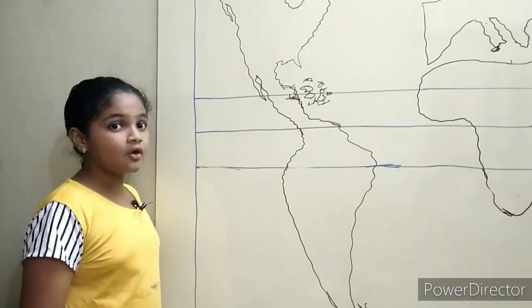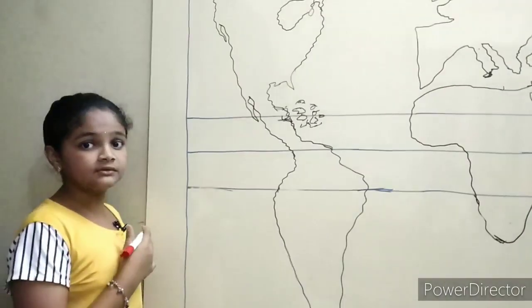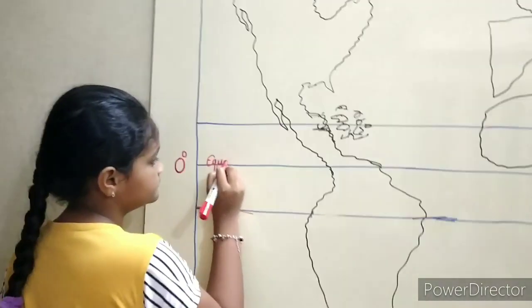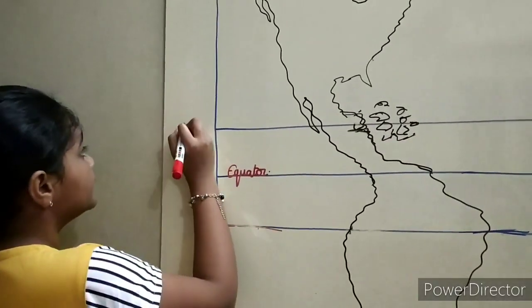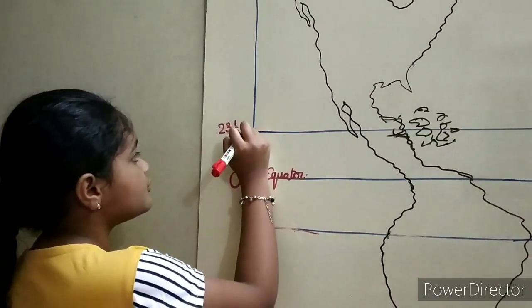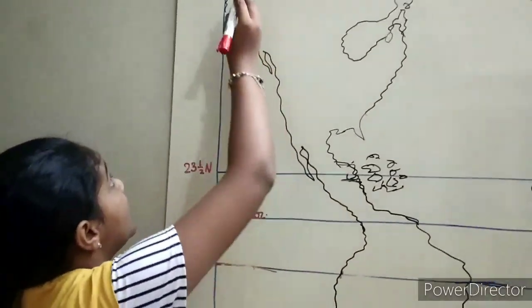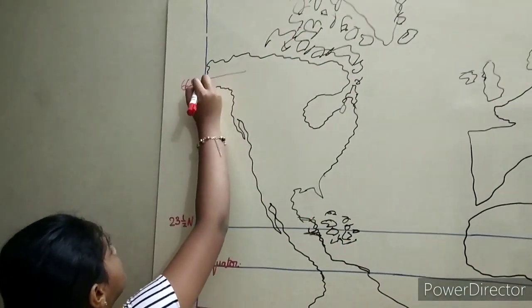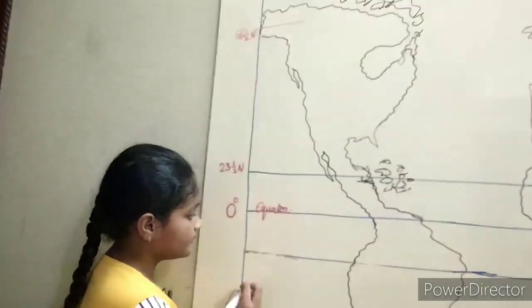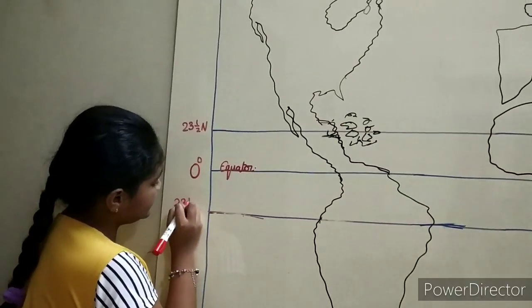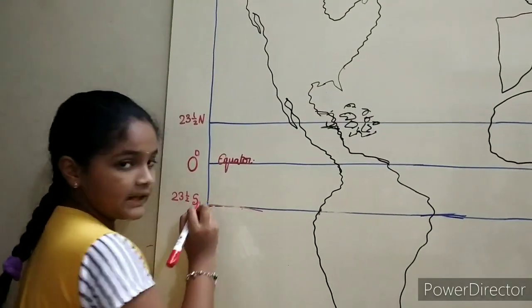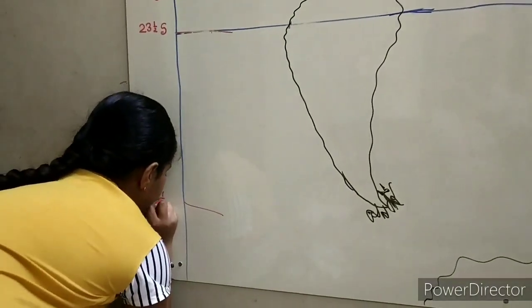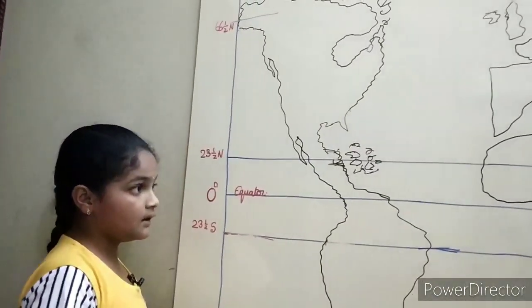Now we will see continents and oceans on the map. First, latitude: zero degrees is the Equator. 23 and a half degrees north latitude is the Tropic of Cancer. 66 and a half degrees north latitude is the Arctic Circle. 23 and a half degrees south latitude is the Tropic of Capricorn. 66 and a half degrees south latitude is the Antarctic Circle.